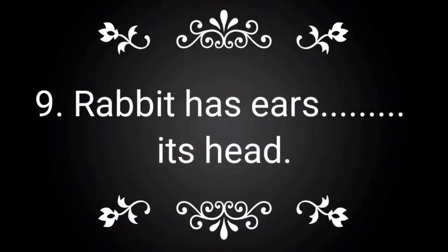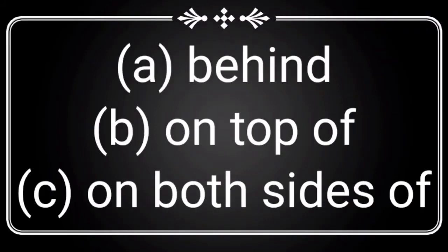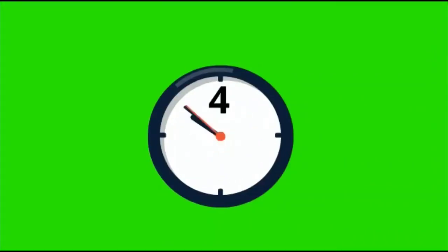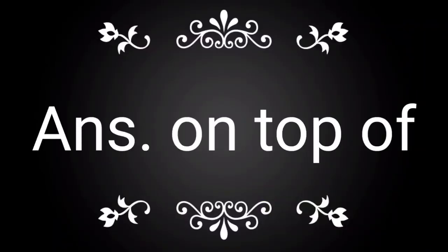Question number 9: Rabbit has ears dash its head. You have three options — Option A: behind, Option B: on top of, Option C: on both sides of. Think the correct answer within 10 seconds. The correct answer is on top of. On top of is the correct answer for this question.